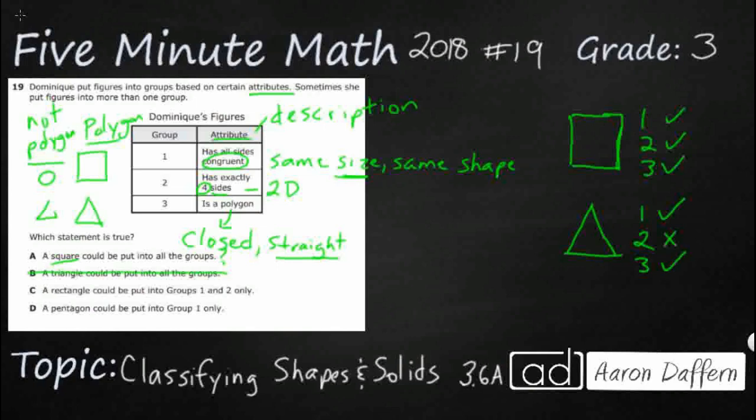A rectangle could be put into groups one and two only. So let me put this right here as my rectangle. So my rectangle, does it have all four sides congruent? No. It's got two long sides, two short sides. That's the difference between a square and a rectangle. So that's not going to work already. It does have exactly four sides, but it says only one and two. But this one also works for three because it's also a polygon. So this answer is just not working.